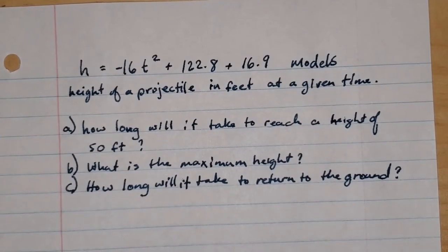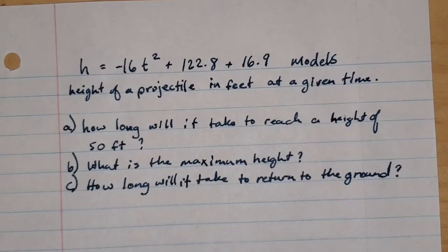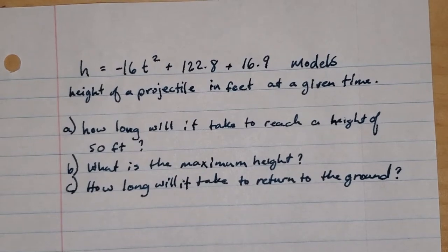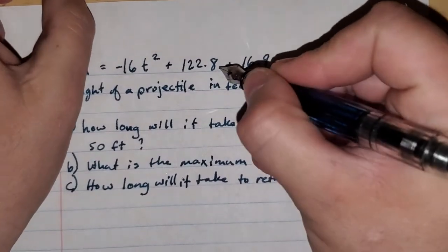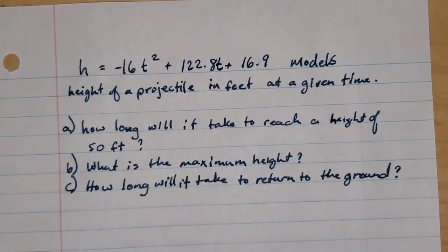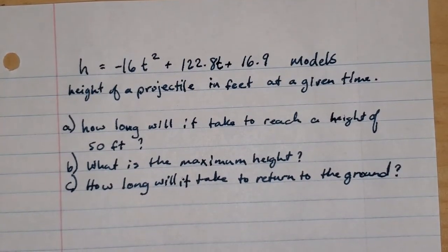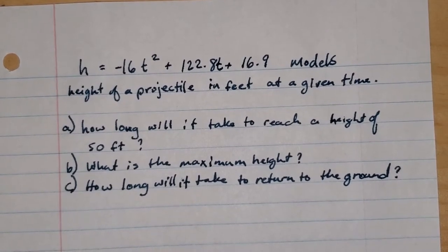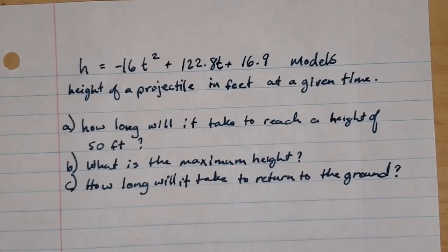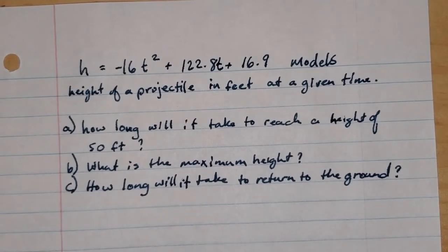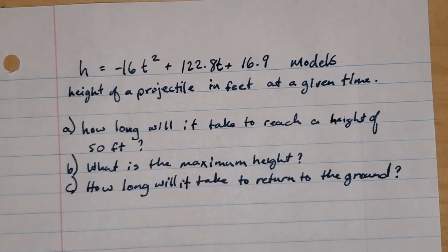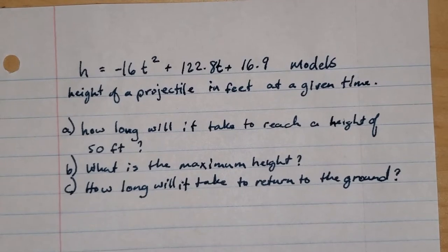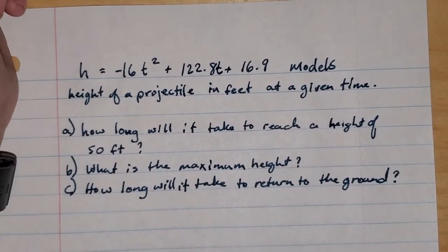We are given a physics model: H equals negative 16t squared plus 122.8t plus 16.9. This model represents the height of a projectile in feet at any given time t. We're asked three questions: A, how long it takes to reach a height of 50 feet; B, what is the maximum height; and C, how long will it take to return to the ground. I'm going to work part B first.